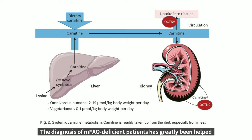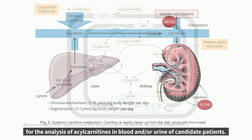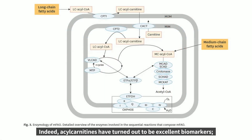The diagnosis of mitochondrial fatty acid beta-oxidation deficient patients has greatly been helped by revolutionary developments in the field of tandem mass spectrometry for the analysis of acylcarnitines in blood and or urine of candidate patients. Indeed, acylcarnitines have turned out to be excellent biomarkers.